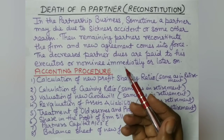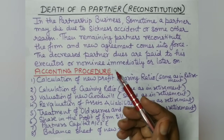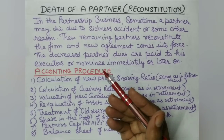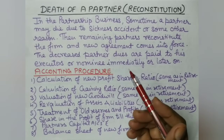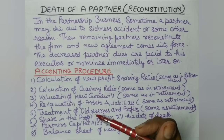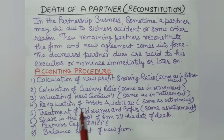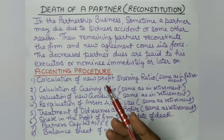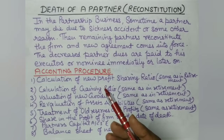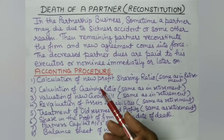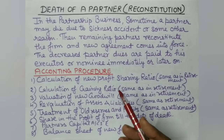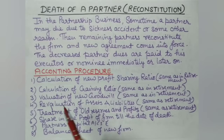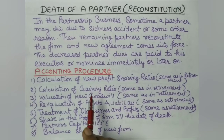The accounting procedure is largely the same; there are only minor differences between retirement and death. We have already discussed the retirement accounting process in previous videos. If you have understood the retirement concept clearly, you will easily understand the death case as well. If you have not watched those videos, please watch them first so that the retirement process is clear.